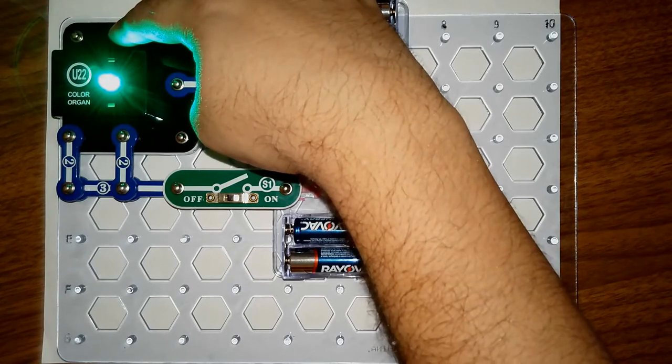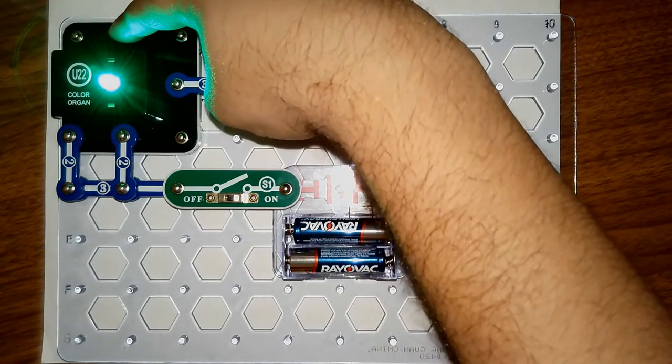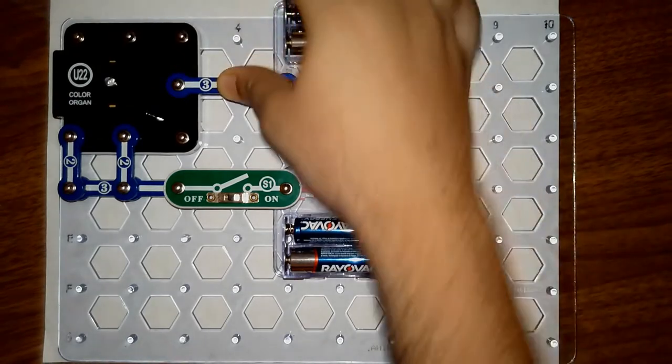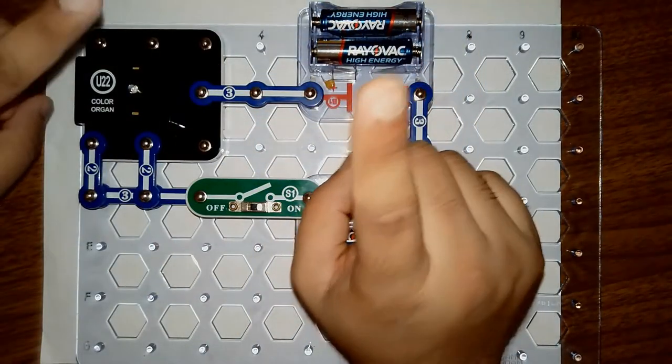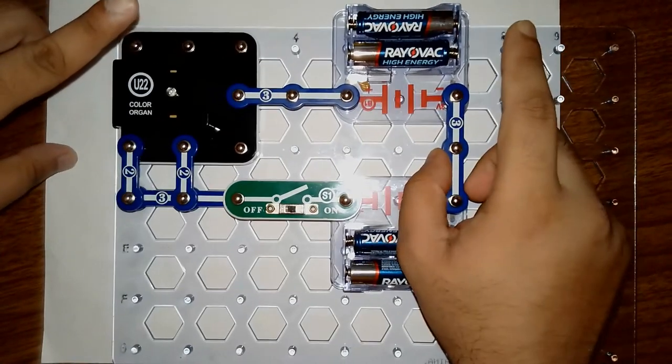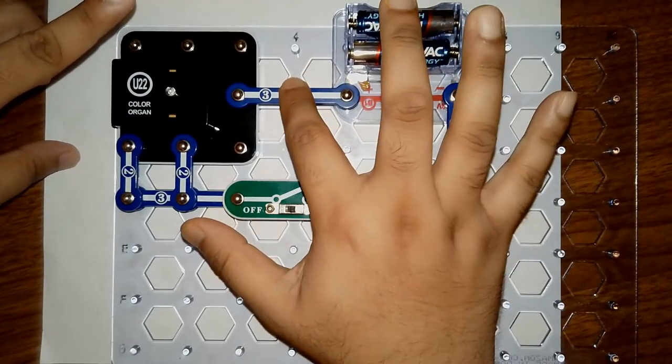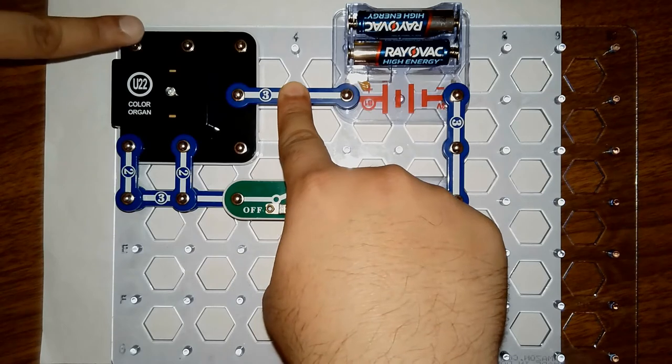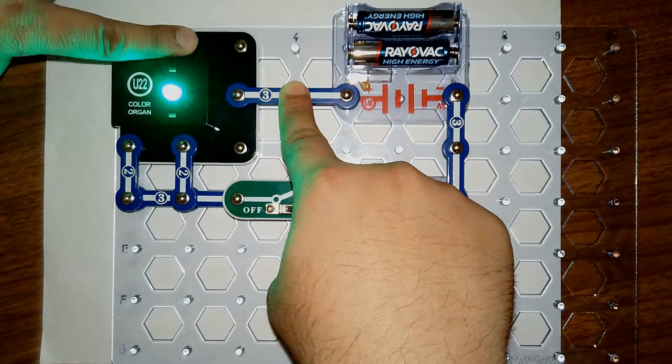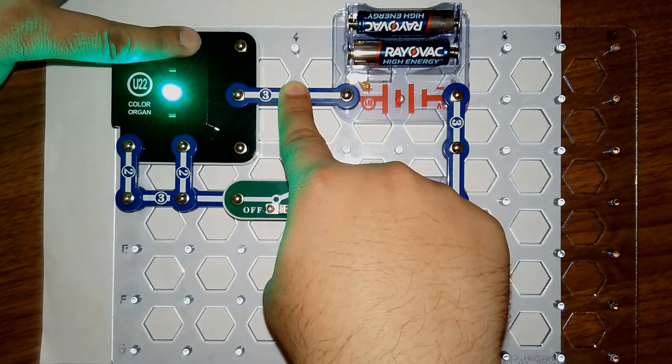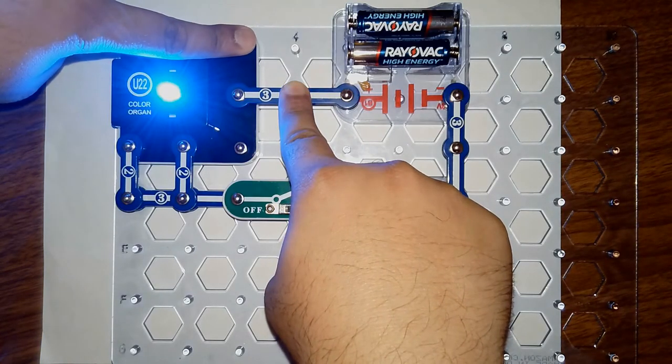So it's creating green. I want to create red, so I can touch this point. With your two fingers, you can use two hands - one finger will go here and another finger you can touch this point. This will create red. Another point will create green light. This point will create blue light.